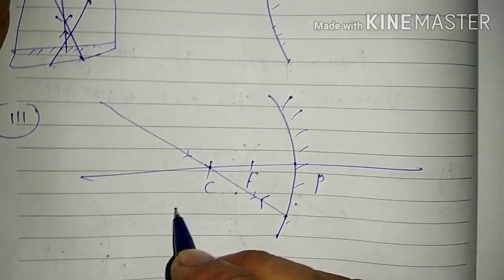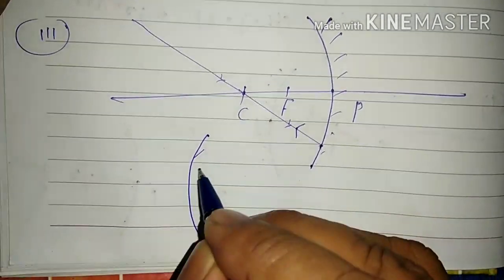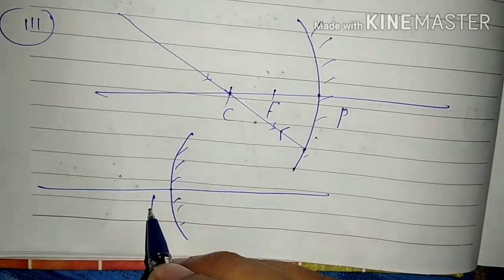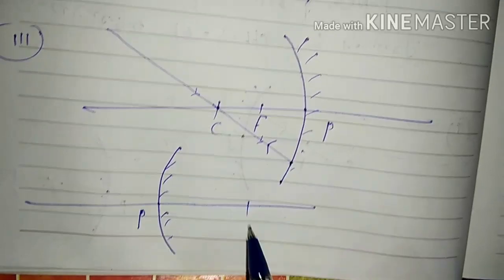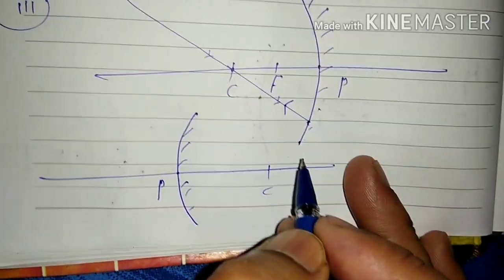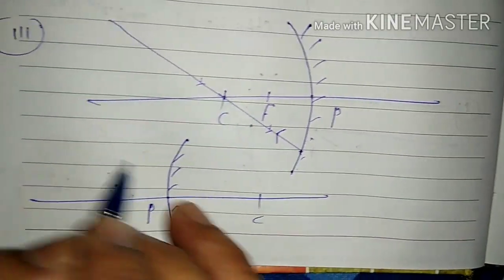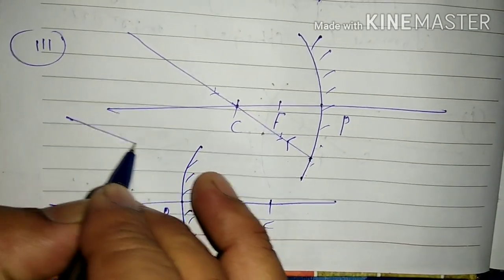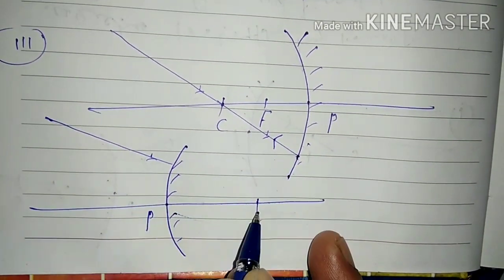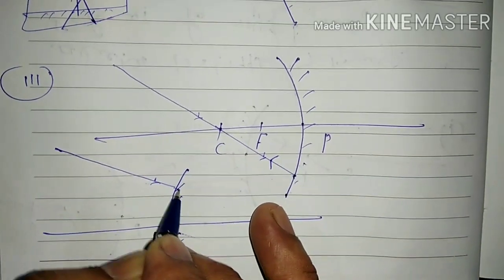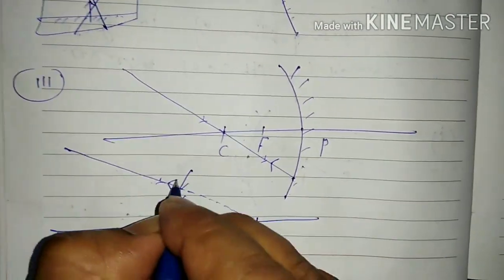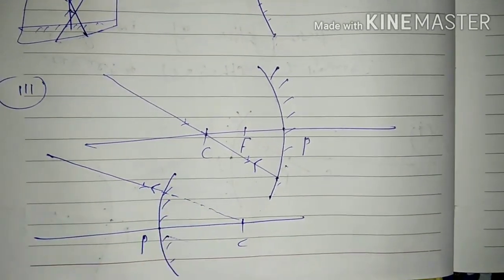For a convex mirror, if any ray of light is incident in such a way that it appears to pass through its center of curvature — a virtual event — then after reflection it retraces its path from that point.